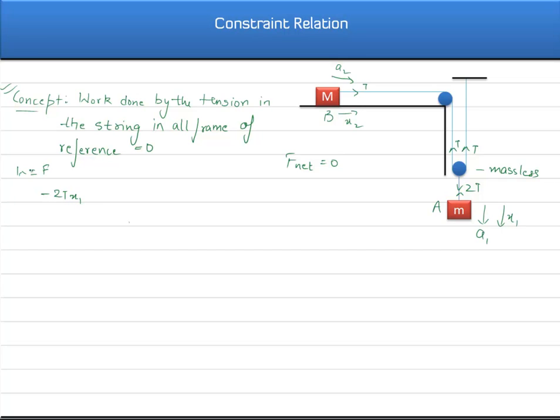This is f x cos theta. Obviously in this case 2T is acting upwards and x1 is downward, so what is the angle between them? It is 180 degree and cos 180 is minus 1. So that means work done by the tension on the block A is minus 2T dot x1.